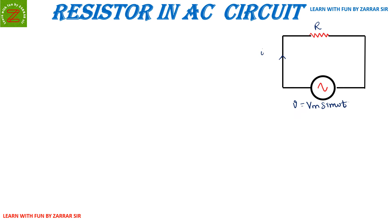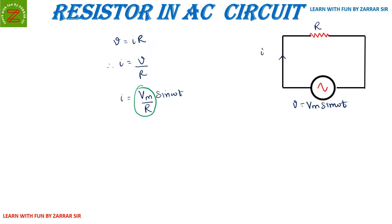Starting with Ohm's Law: v = iR, therefore i = v/R. Substituting v = vm sine ωt, we get i = (vm sine ωt) / R. Since vm/R represents the peak current im, we can write the instantaneous current as i = im sine ωt.